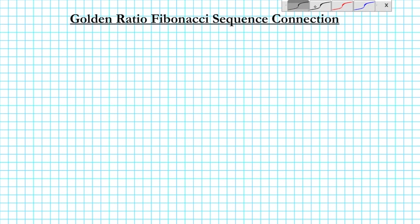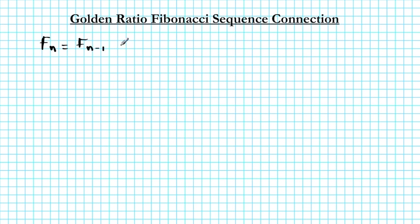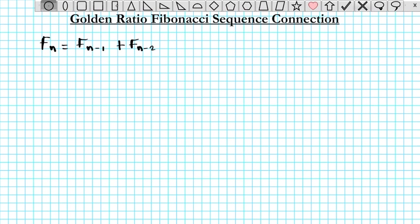So let's start off by writing out what the Fibonacci sequence is. The Fibonacci sequence is defined by F sub n equals F sub n minus 1 plus F sub n minus 2. That's basically what the Fibonacci sequence is. Now we're going to start out by taking a look at the golden ratio and then see if we can derive the Fibonacci sequence from the golden ratio.